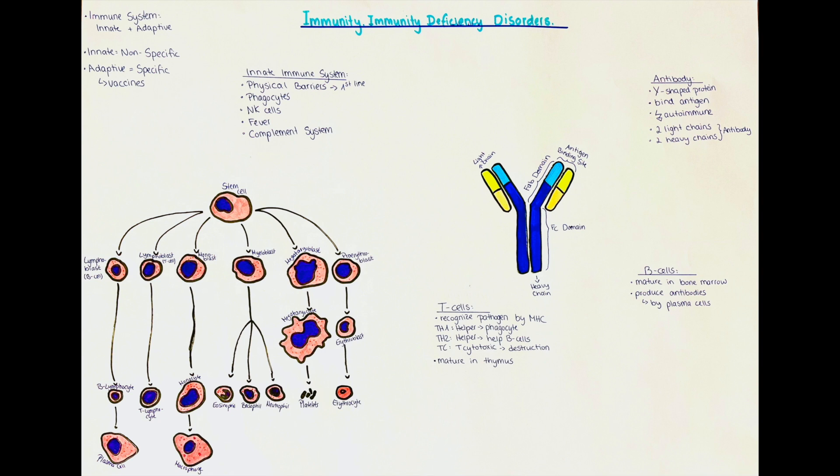Examples of these phagocytic cells are macrophages, neutrophils, and monocytes. Another cell we need to talk about is the natural killer cell. These are cells that induce apoptosis in a cell that is either infected by a virus or it could also be a mutated cell from a tumor.